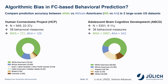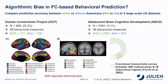Both datasets were dominated by white Americans in sample size, and we wanted to compare the prediction accuracy between white Americans and another minority ethnic group such as African Americans. One thing to note is that we used self-reported ethnicity or race, representing which community or group the participants think they belong to. For both datasets, the whole-brain functional connectivity was used as the input feature for the machine learning model to predict behavior measures.